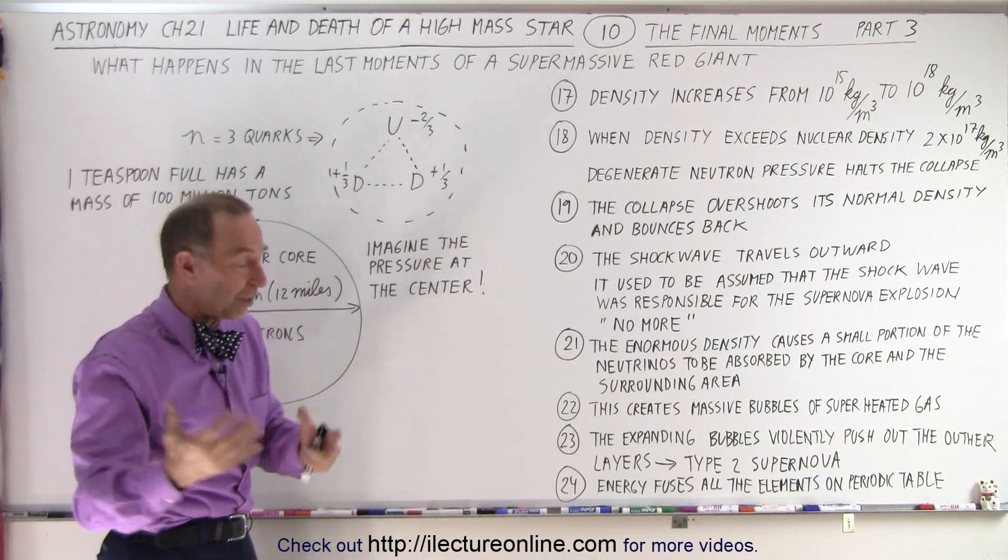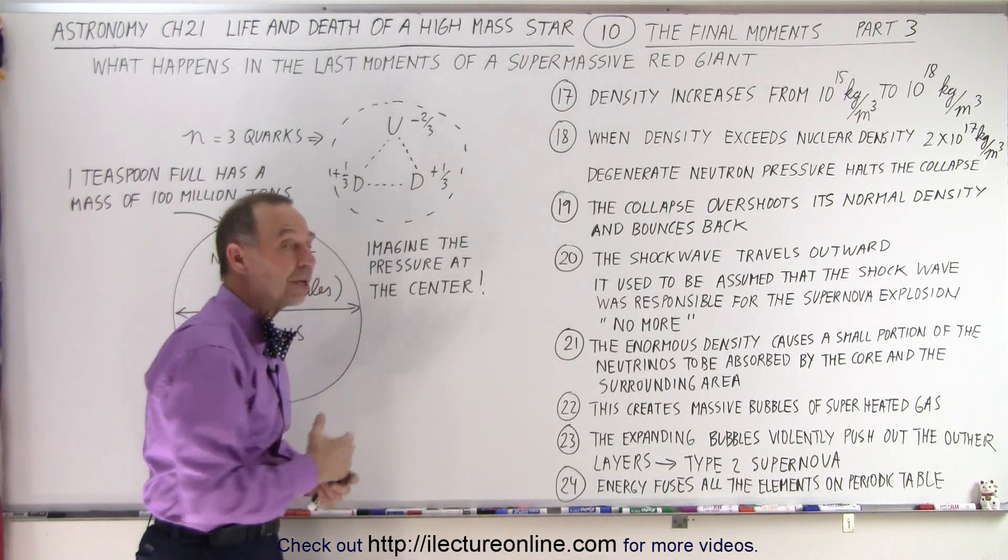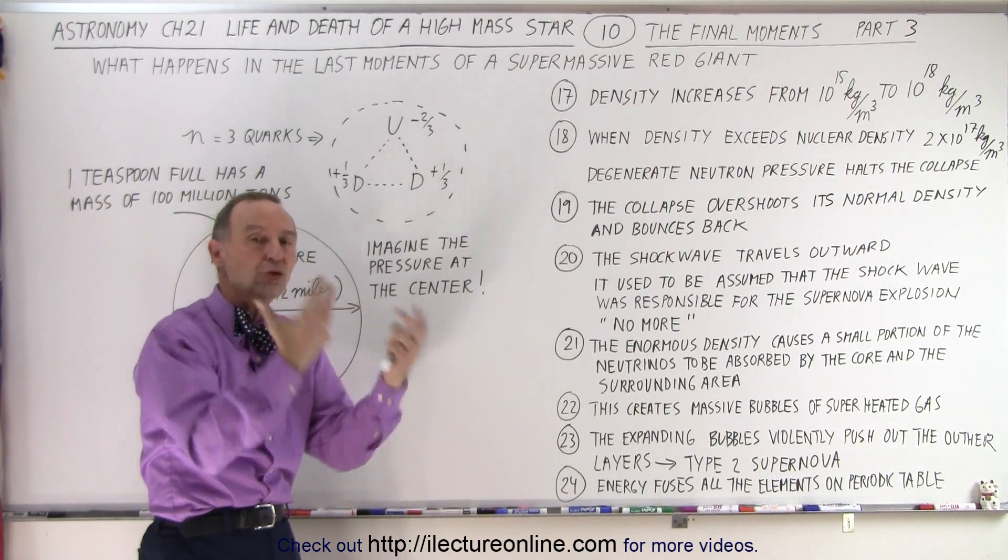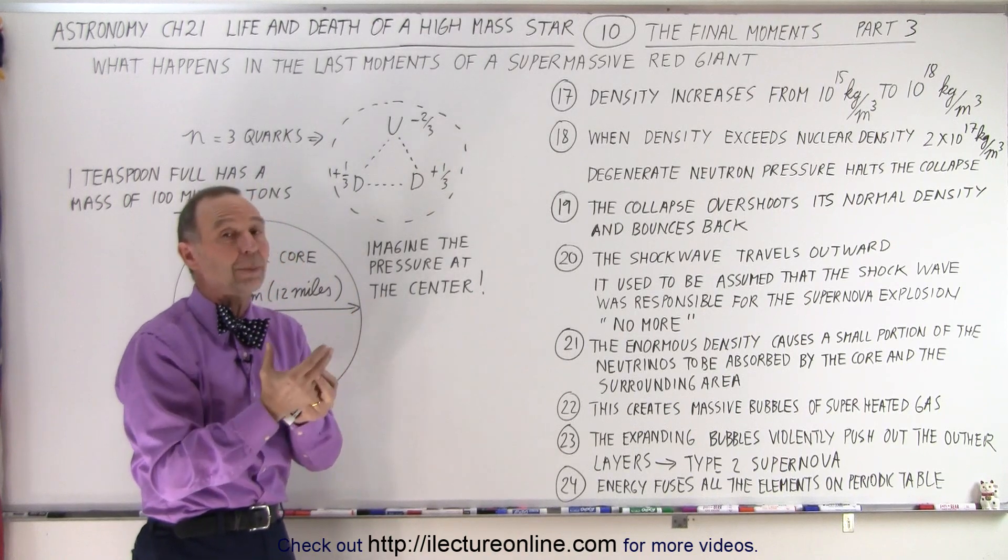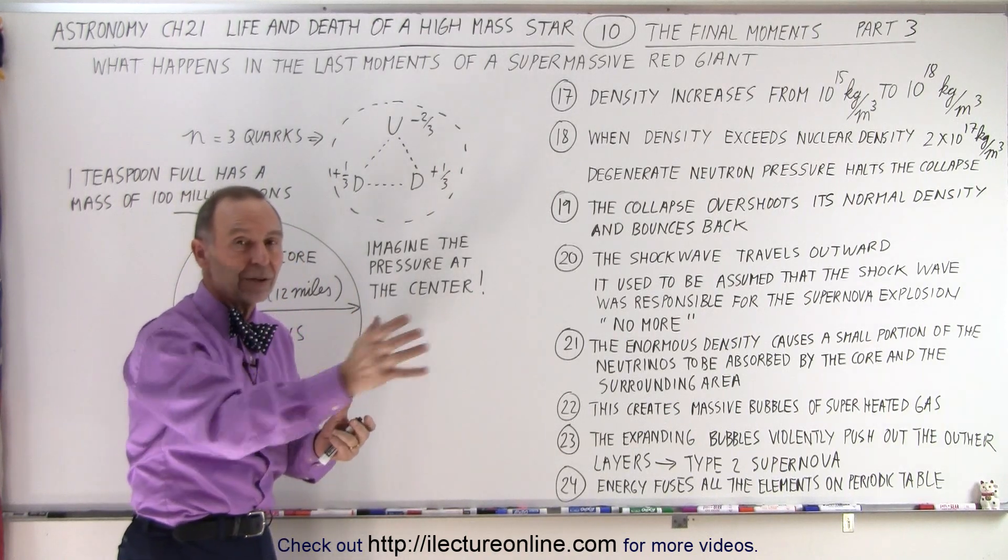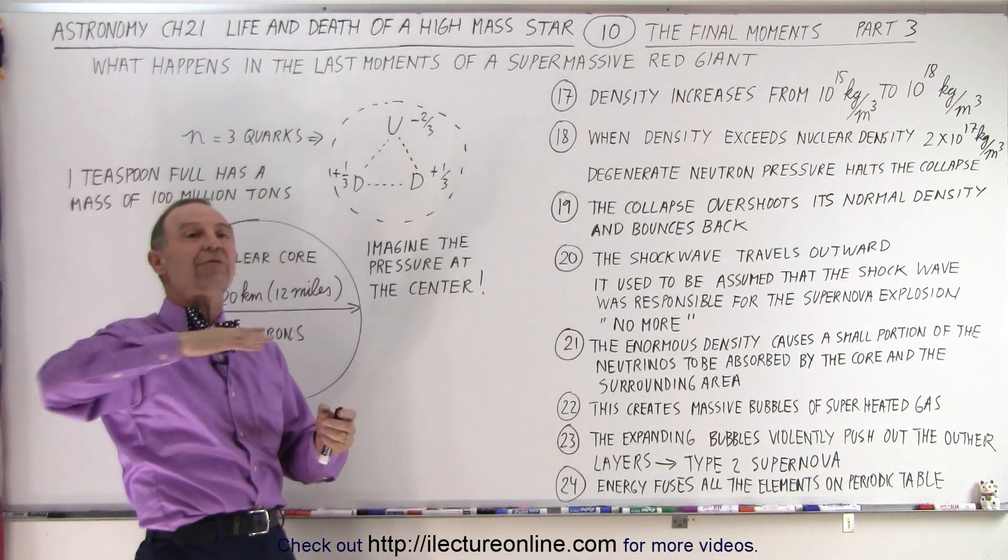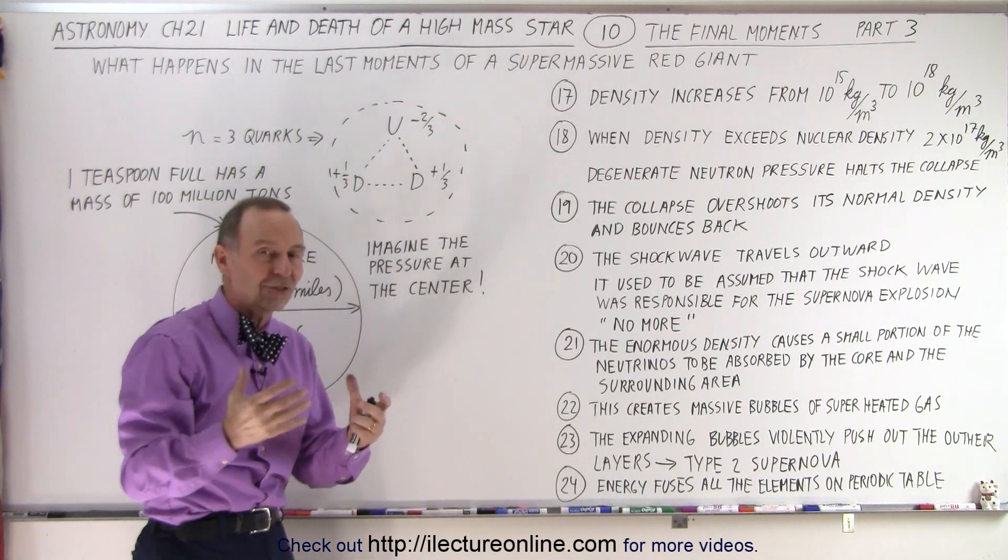When those nebulas then joined with other nebulas, that then formed new stars, those stars were then able to form planetary nebulas, or not planetary nebulas, but material around the forming star that eventually would turn into planets. Yes, terrestrial planets, like the Earth.